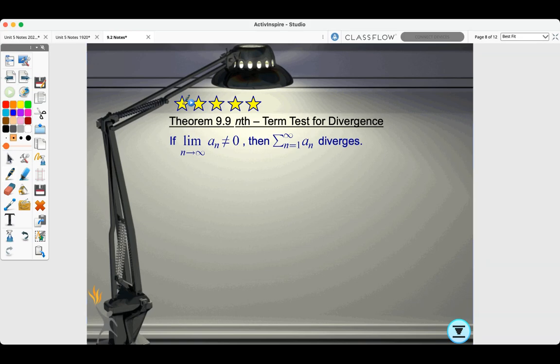Theorem 9.9, the nth term test for divergence. This is your first test that you will need to know. If the limit as n approaches infinity of the series does not equal 0, then the series diverges.